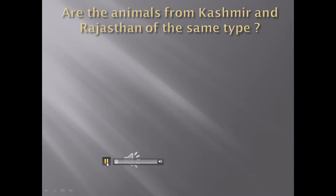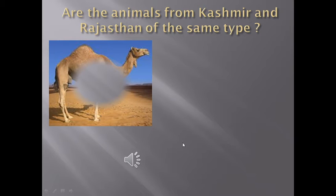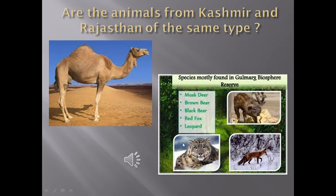Similarly, are the animals from Kashmir and Rajasthan of the same type? The camel, a desert animal, is not found in Kashmir, whereas a musk deer, a brown bear, black bear, red fox and leopard are found in Kashmir, which are not to be seen in the desert. What is the reason for these differences?